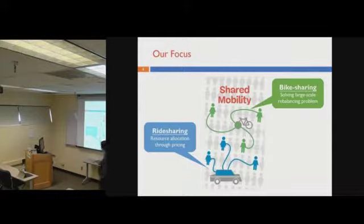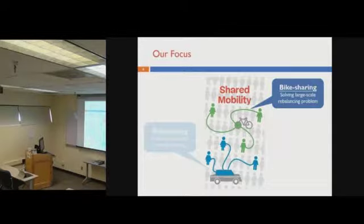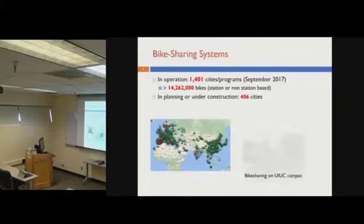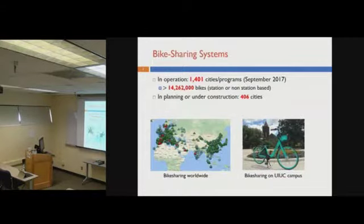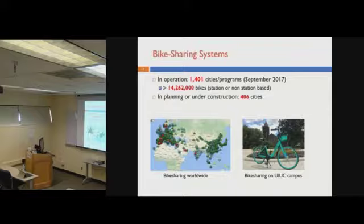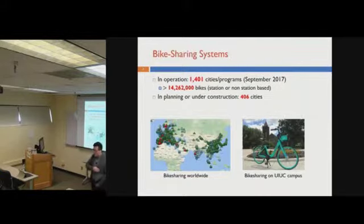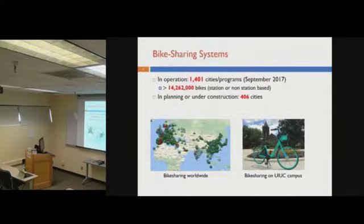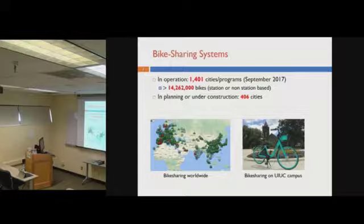First, let's look at the bike sharing system. Bike sharing is everywhere. Here is a picture of VeoRide, which was deployed by the beginning of this semester with about 500 bikes all over campus. But bike sharing is a global development — there are thousands of bike sharing programs or cities doing this, with millions of bikes on the street. It's been reported that more than 400 cities are planning or trying to implement bike sharing systems.